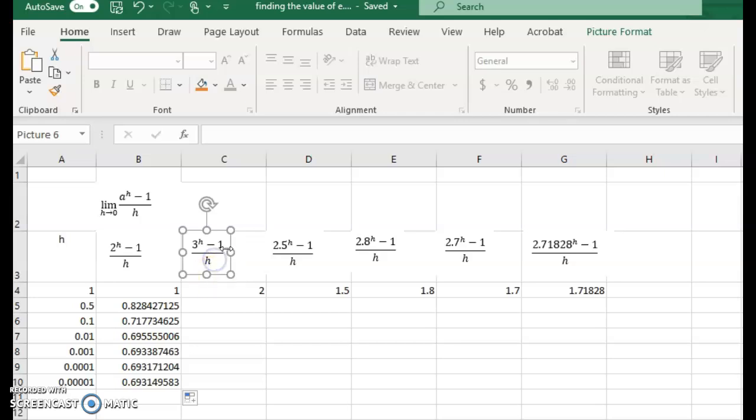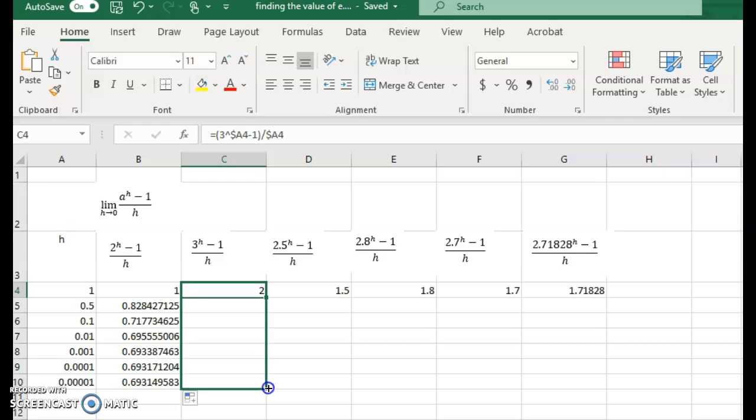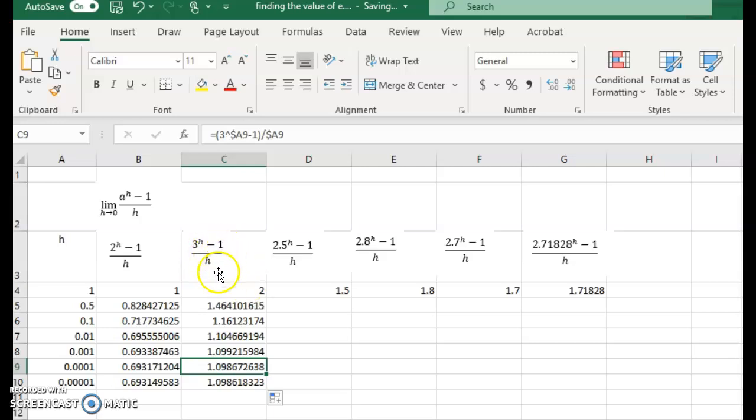So we're going to replicate the same idea with this one now. We're going to take a different value of a, in this instance 3, and then we're going to change the values of h as we go. Now I won't go through and give you all the detail, but I'll copy that formula down. And as you can see, we start initially with 2. And as we proceed down, it seems to settle on a value roughly around 1.0986. So our limit of 3 to the power h minus 1 all over h, as that approaches 0, is about 1.098.